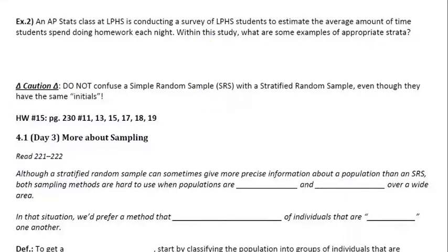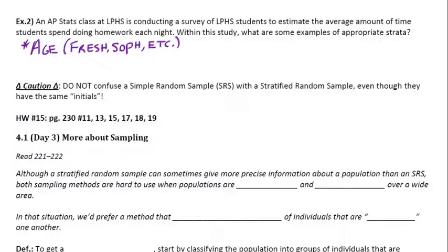There are all sorts of ways to look at this. One we just mentioned is the class you're in — whether you're a freshman, sophomore, junior, or senior — which could make a big difference in the average amount of time spent doing homework. Another consideration: are you in AP classes versus non-AP classes? That seems like it would make a big difference as far as how much time is spent doing homework.